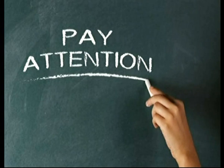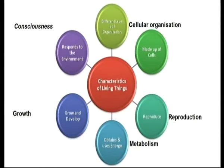In our book, the five key characteristics of living things are: metabolism, reproduction, cellular organization, growth, and consciousness.